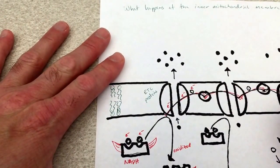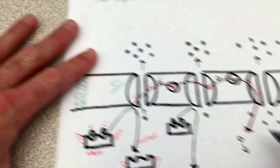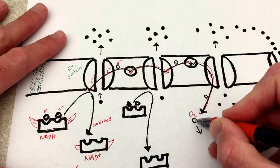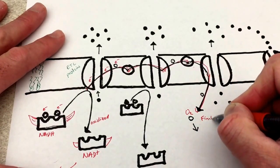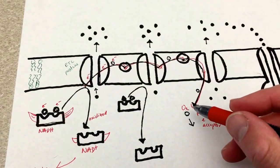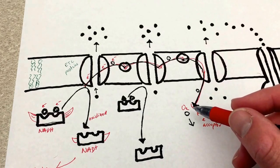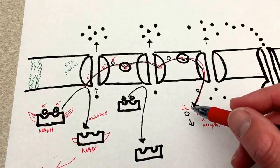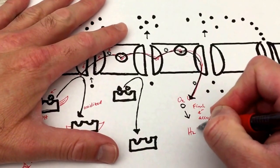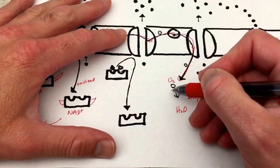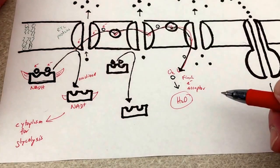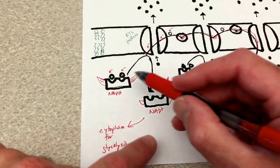Finally, that electron arrives at the final electron acceptor, which is O2 — oxygen is the final electron acceptor. When an atom has electrons added to it — when it possesses unpaired electrons — it wants to make a covalent bond. What can we put onto oxygen but hydrogens? So we split the O2 molecule, add some electrons to it, and we get water as a byproduct.